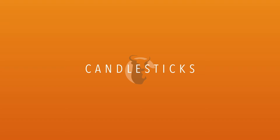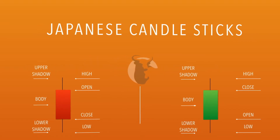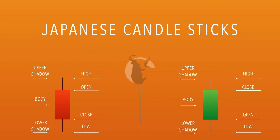To move on forward, as we can see in this diagram here, we have two different candlesticks. We're going to have the red candles representing the bearish candles and the green candles representing the bullish candles.